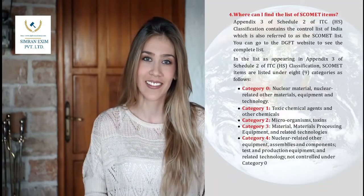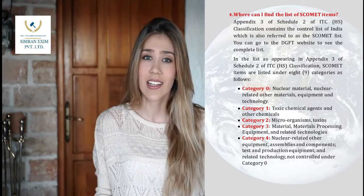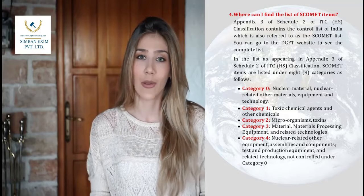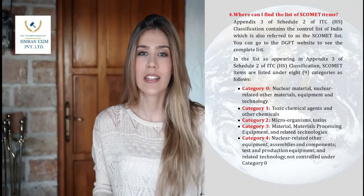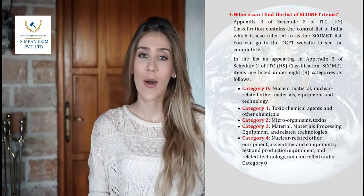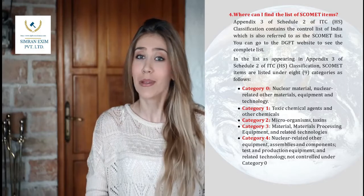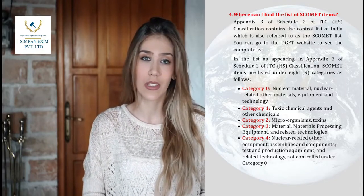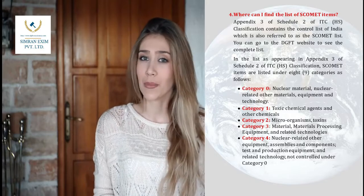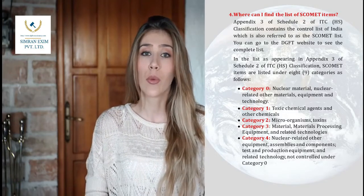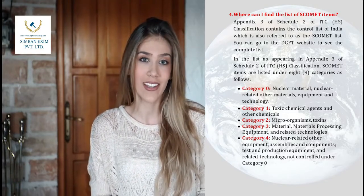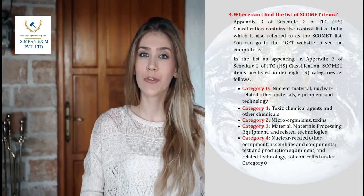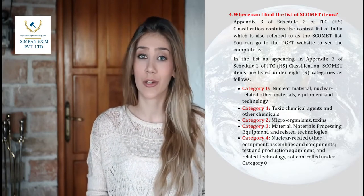Where can I find the list of SCOMET items? Appendix 3 of Schedule 2 of ITC classification contains the Control List of India, which is also referred to as the SCOMET list. You can go to the DGFT website to see the complete list. SCOMET items are listed under 8 to 9 categories.